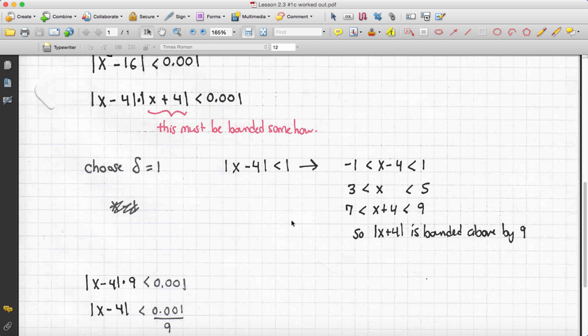Can you see what x plus 4 is bounded by? It's bounded above by the number 9. In other words, choosing delta equals 1 means that x plus 4 never gets up to 9, and it never gets any bigger than 9. It's bounded by 9.